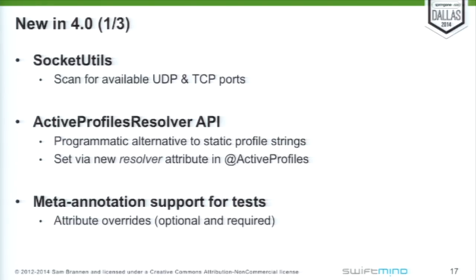Next up: meta-annotation support for tests. A meta-annotation is an annotation on another annotation. In Java, the language does not support inheritance with annotations — you can't say public @interface MyAnnotation extends anything. But in source code you can declare other annotations on top of your annotation declaration, which gives you pseudo-inheritance. What we added in 4.0 is support for these annotations for test annotations, and also support for what we call attribute overrides — that will make more sense with some examples later.